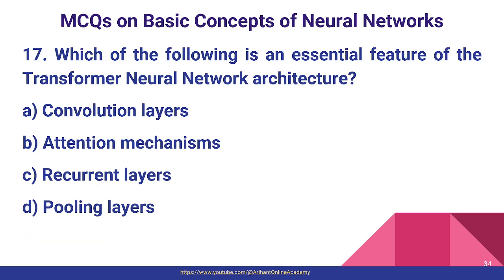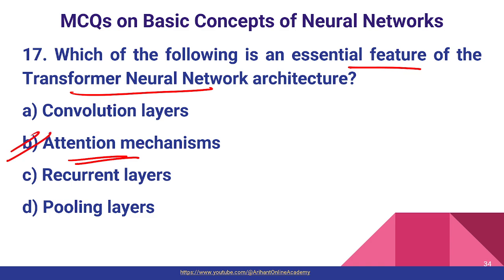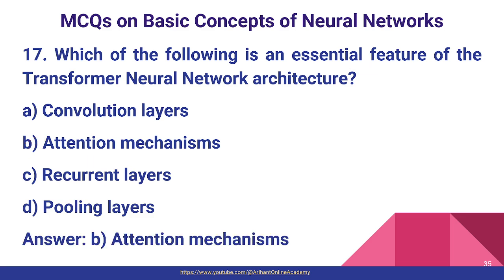Question number seventeen: what is the essential feature of the transformer neural network architecture? The essential feature is the attention mechanism — specifically self-attention. Attention mechanism is the most essential feature of the transformer neural network. Option B.